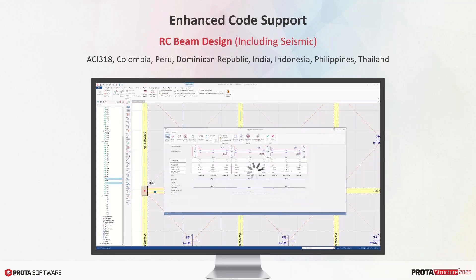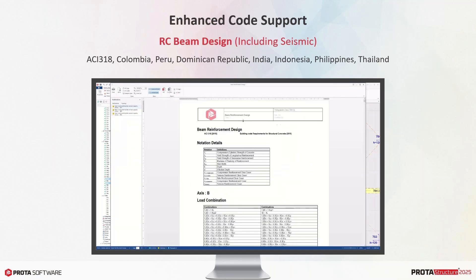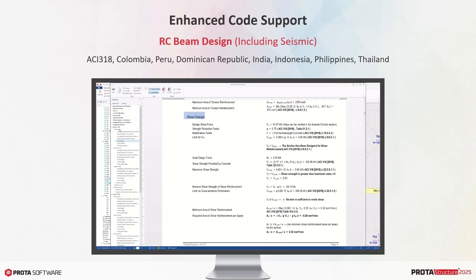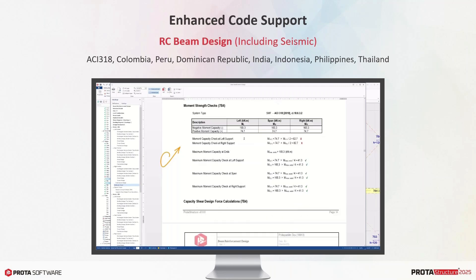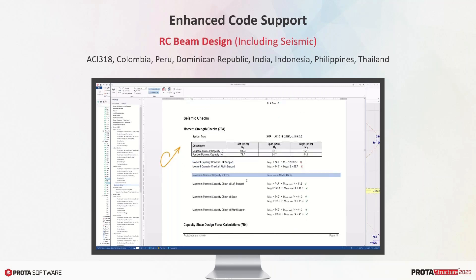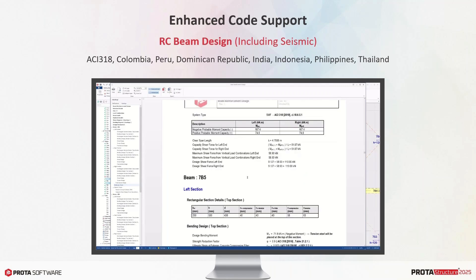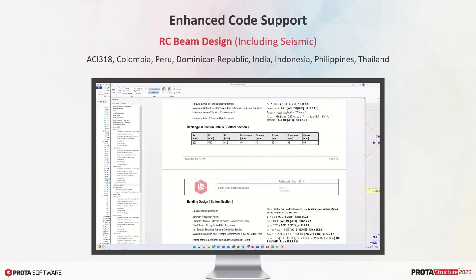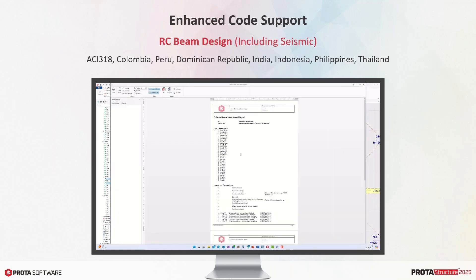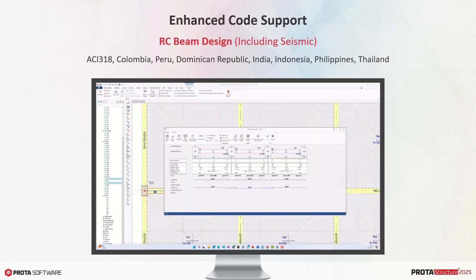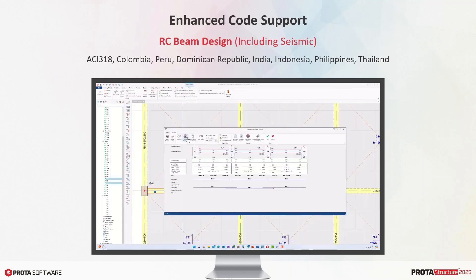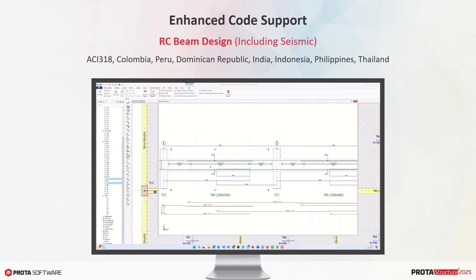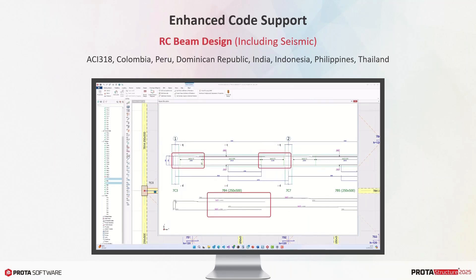Similar to columns and shear walls, beams also follow seismic capacity design principles according to these codes. We support ACI 318 Chapter 18, Colombia, Peru, Dominican Republic, Indonesia, Philippines, Thailand, and India. In addition to member checks, seismic and non-seismic, we provide detailed reports on strong column/weak beam checks and joint shear checks to ensure ductility at specific joints.